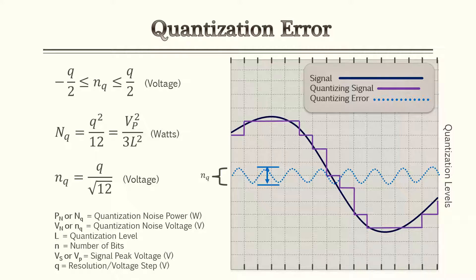In blue it shows a perfect sine wave, though that's not usually the case — usually it's very distorted. This is just to provide a visual aid. The equations shown allow you to find the noise power or the noise voltage just by using resolution or the peak voltage.